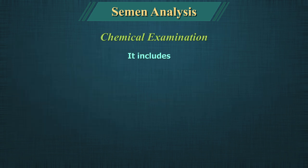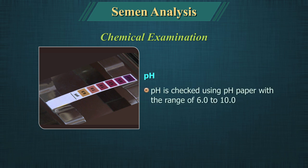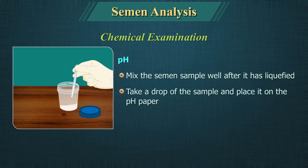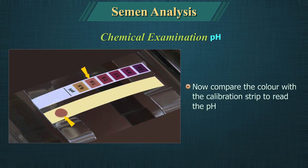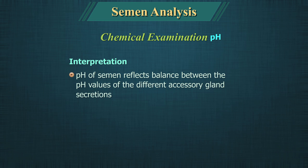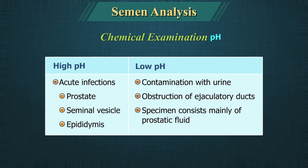Chemical examination includes pH, fructose test and occult blood. pH: The pH is checked using pH paper in the range of 6 to 10. Mix the semen sample well after it has liquefied, take a drop and place it on the pH paper, let it spread and wait for the colour to become uniform, then compare the colour with the calibration strip to read the pH. The pH reflects the balance between the alkaline seminal vesicular secretion and the acidic prostatic secretion. High pH values are seen in acute infections of the prostate, seminal vesicle or epididymis. Low pH may be due to contamination with urine, obstruction of the ejaculatory duct, or when the specimen consists mainly of prostatic fluid.